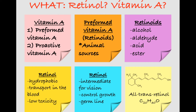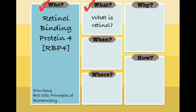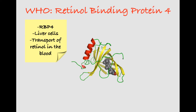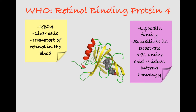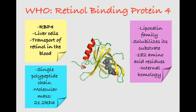Now that we have some background information on our substrate, let's start focusing on our protein and go back to the question of who. Retinol binding protein 4, also called RBP4 or simply RBP, is mainly synthesized and stored in the liver. As we can guess from its name, it's responsible for transporting retinol in the blood. It's a part of the lipocalin family of proteins and solubilizes retinol in order to transport it. RBP is composed of 182 amino acid residues that show internal homology between residues 36 to 83 and 96 to 141, having a molecular weight of 21.2 kilodaltons. RBP is composed of a single polypeptide chain and is seen to have three disulfide bridges.